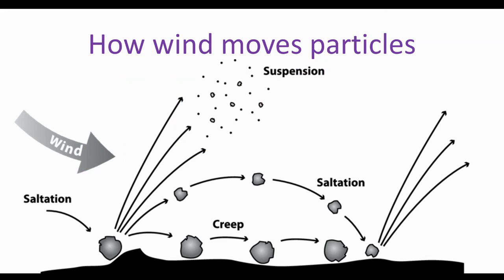Wind is an agent of erosion which means that it moves particles. There are three different ways it does this. The first way is creep. In creep, wind moves particles along the ground in a rolling motion.